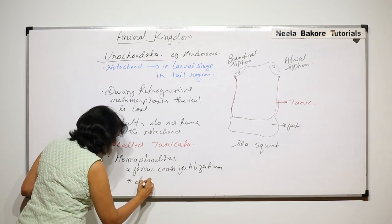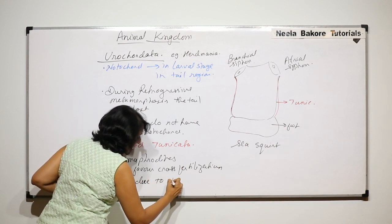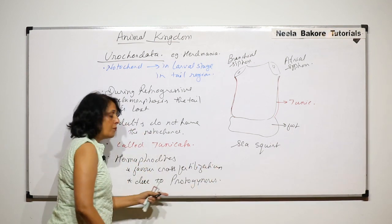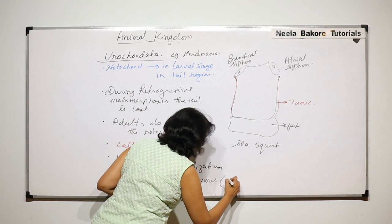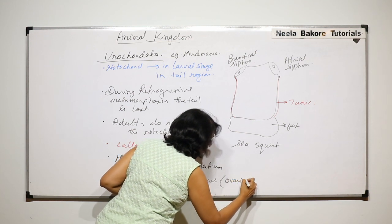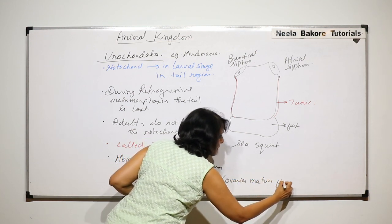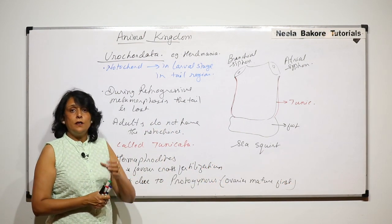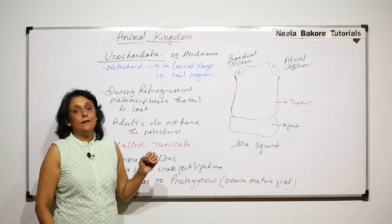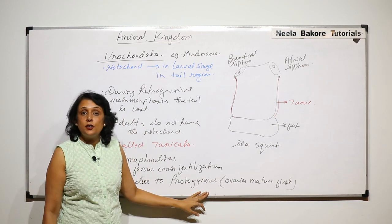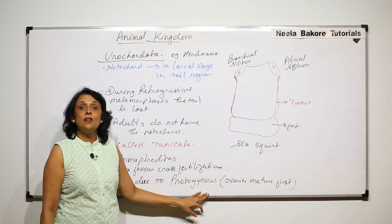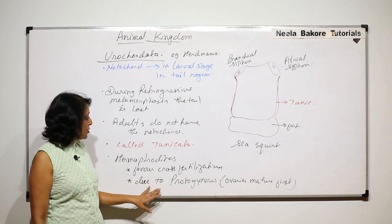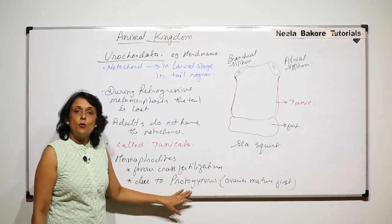Protogynous means the female sex organ — that is the ovaries — matures first. By that time the male sex organs are not fully functional and sperms are not formed. So fertilization with the sperms of the same animal is not possible, and that is why we say they favour cross fertilization due to their protogynous or protogynic nature.